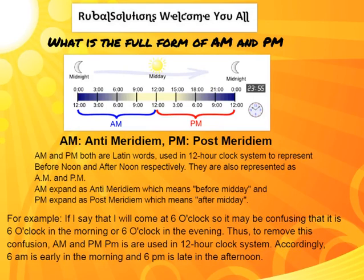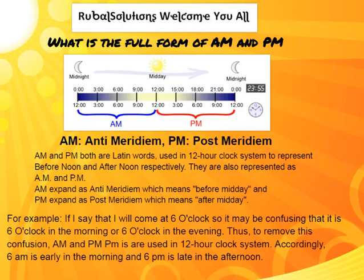Accordingly, 6 AM is early in the morning and 6 PM is late in the afternoon. You can also see the diagram: from midnight 12 o'clock to afternoon 12 o'clock is AM, and from afternoon 12 o'clock to midnight 12 o'clock is PM.